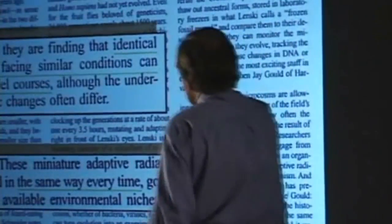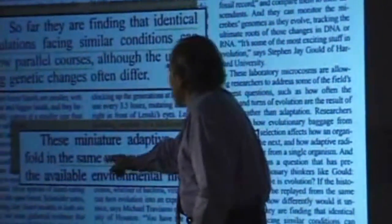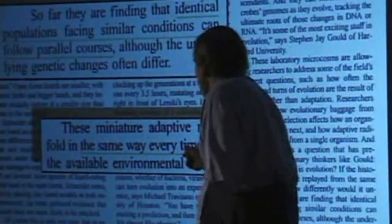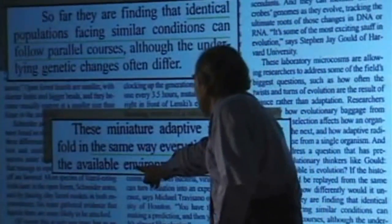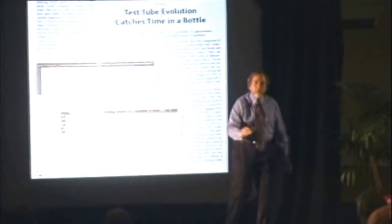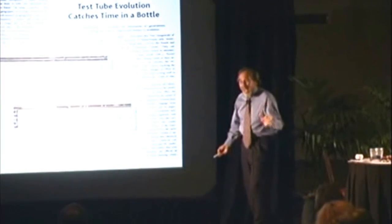Where's the random nature of that process? The answer is: not random. Evolutionary changes are always adapting to the environment. These miniature adaptive radiations unfold in the same way every time, governed by the available environmental niches. We adjust our genes to fit the environment that we think we live in. Perception may be right and perception may be wrong — and therefore perception is belief. It's belief that changes your genes.